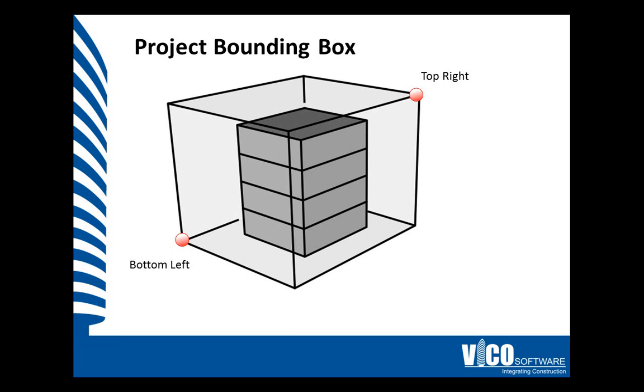The default size of the bounding box has an offset of 10 feet, or 3 meters, from the first model's outer limits.